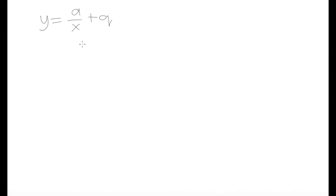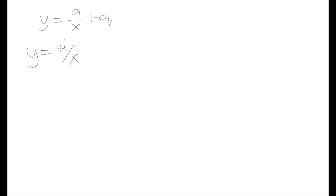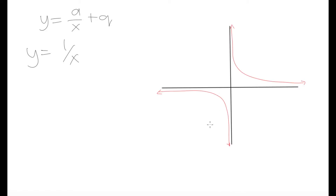These are going to be quite different from the functions we've dealt with in the past few videos. They're going to take on a very different appearance to linear and parabolic or quadratic functions. Let's start by looking at one of the most simple hyperbolic functions: y = 1/x. In this case our a is 1 and we have a q of 0. Here in red is what we would get if we were to graph y = 1/x.